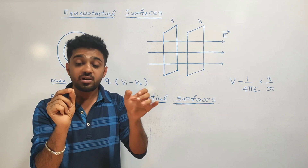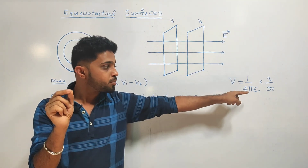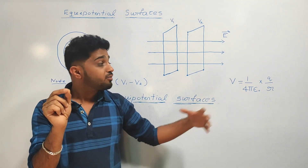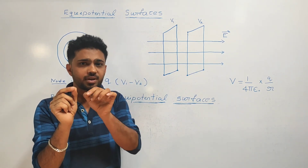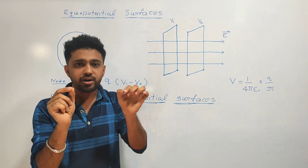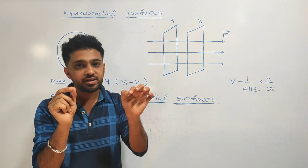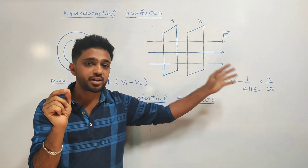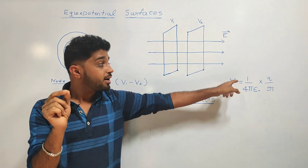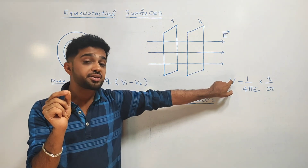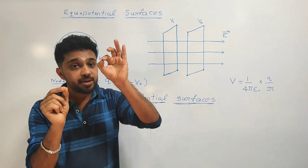Charge Q is the same, 1 upon 4 pi epsilon naught is constant. In any direction at 0.5 meter, we can calculate the electrostatic potential. Since R is the same, the electrostatic potential is the same here.